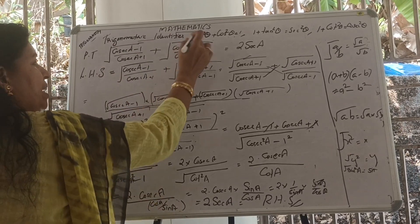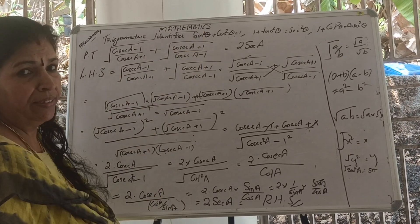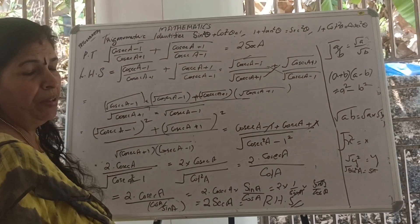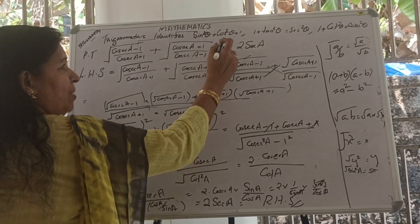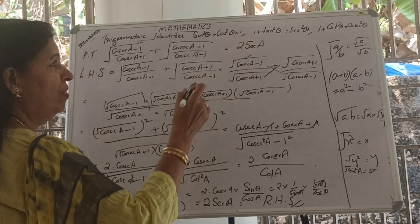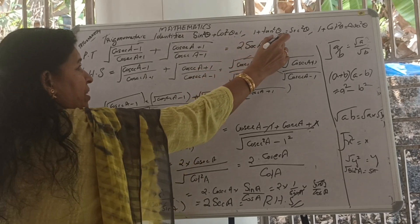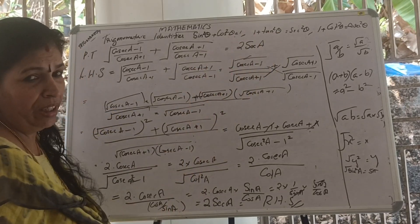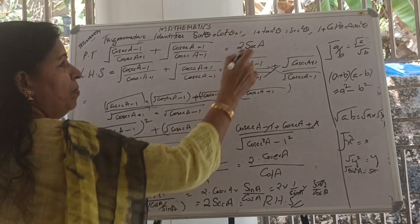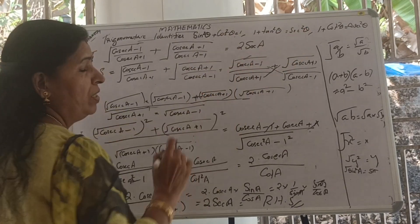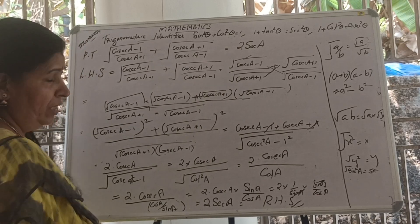To repeat: the three trigonometric identities are — sin squared theta plus cos squared theta equals 1; 1 plus tan squared theta equals sec squared theta; 1 plus cot squared theta equals cosec squared theta.